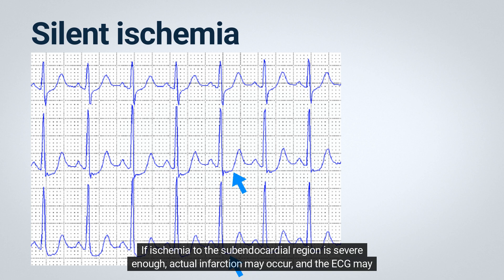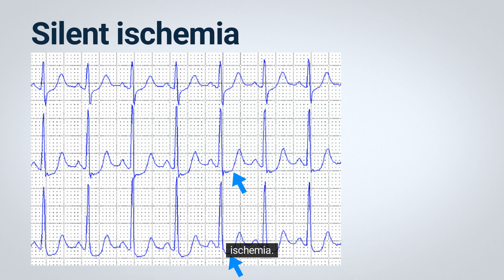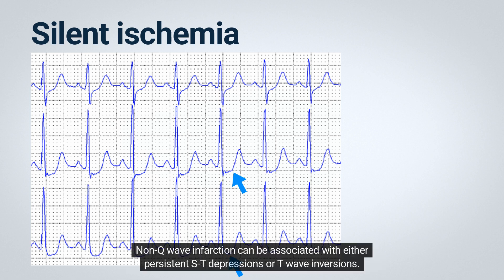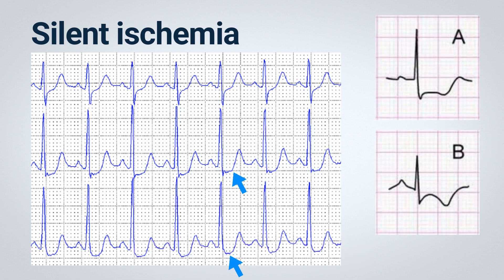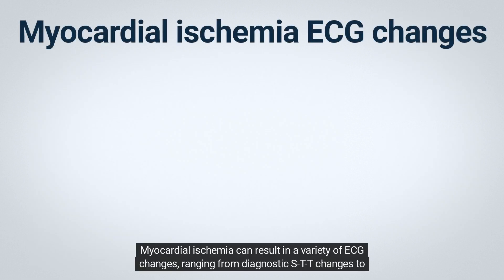If ischemia to the subendocardial region is severe enough, actual infarction may occur and the ECG may show more persistent ST depressions instead of the transient depressions seen with reversible subendocardial ischemia. Non-Q wave infarction can be associated with either persistent ST depressions or T wave inversions.